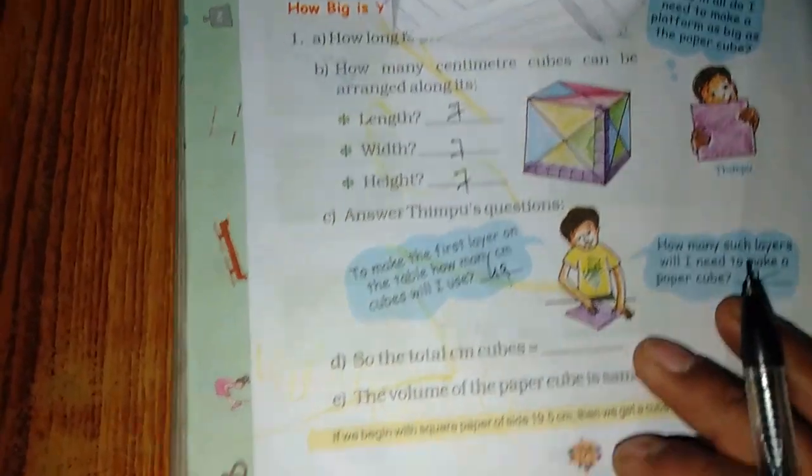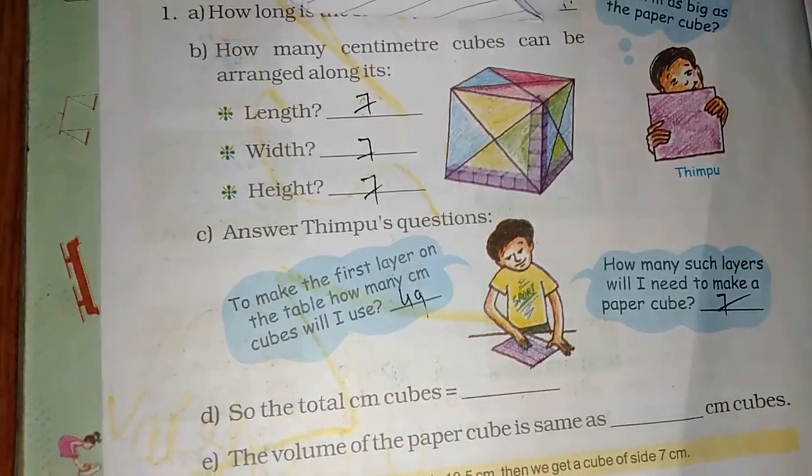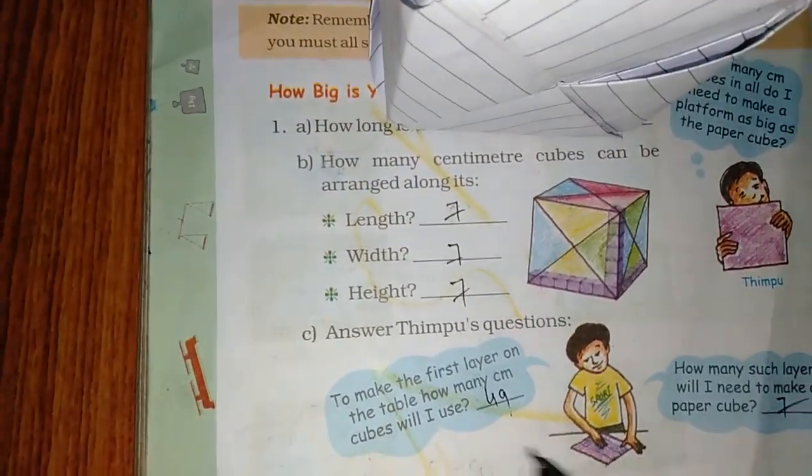So, the total centimeter cubes, how much will it be? What will it be? Multiply. Which one? 49 into 7. Multiply.